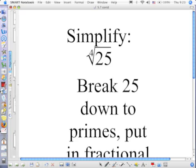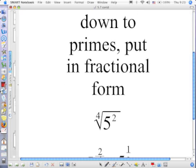The first thing we do is if this number under the radical is a perfect square, cube, fourth power, whatever, we're going to break it down into its primes, but instead of five times five, we're going to write five squared. And then we're going to put it into fractional form.